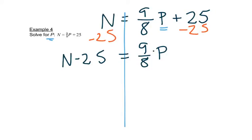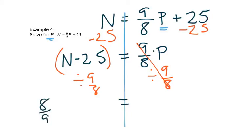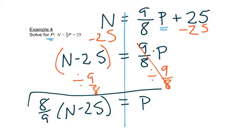Now this is 9 eighths times p. So I need to do the opposite. I need to divide by 9 eighths. And divide this whole side by 9 eighths. Now this is where it's helpful to remember that dividing by a fraction is the same thing as multiplying by the reciprocal. So divide by 9 eighths really means 8 ninths times n minus 25 equals p. And the thing with literal fractions is a lot of times we don't do any work to simplify things. We kind of just leave it. p is by itself. And that's the main thing we want.